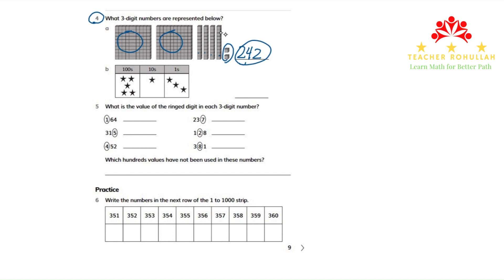In part B of question number four, we have stars showing the hundreds place, the tens place, and the ones place. In the hundreds place, we have five stars.